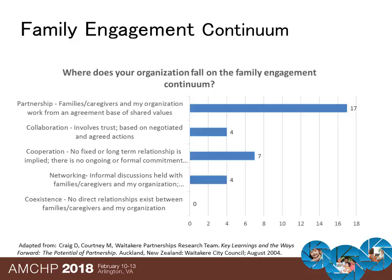We also asked respondents to rank where they believe their organization falls on the family engagement or partnership continuum. Seventeen respondents said they ranked at the partnership level, meaning families and caregivers work from an agreement base of shared values. Four respondents ranked at collaboration, involving trust based on negotiated and agreed actions. Seven ranked at cooperation, meaning no fixed or long-term relationship is implied. Four respondents each ranked at networking, which includes informal discussions held with families and caregivers. No one ranked themselves at the coexistence level.